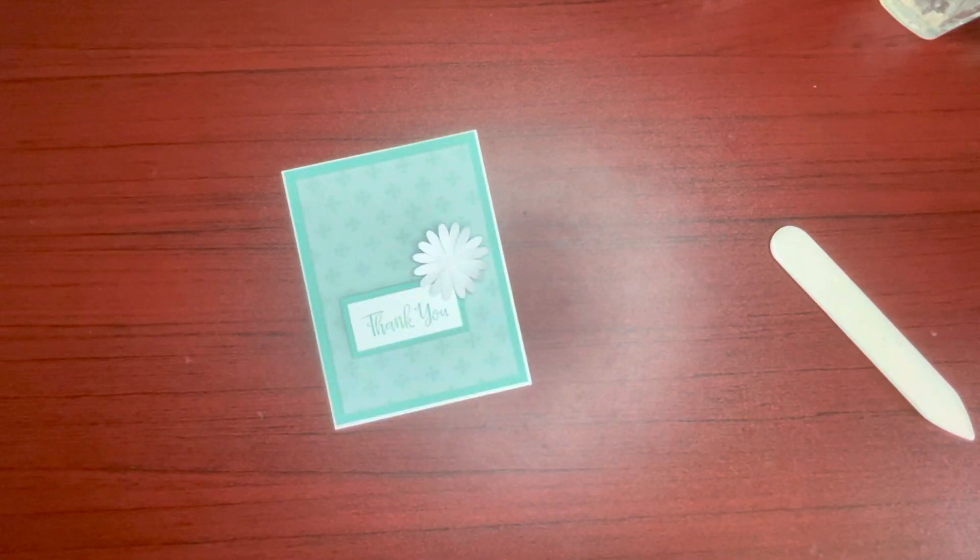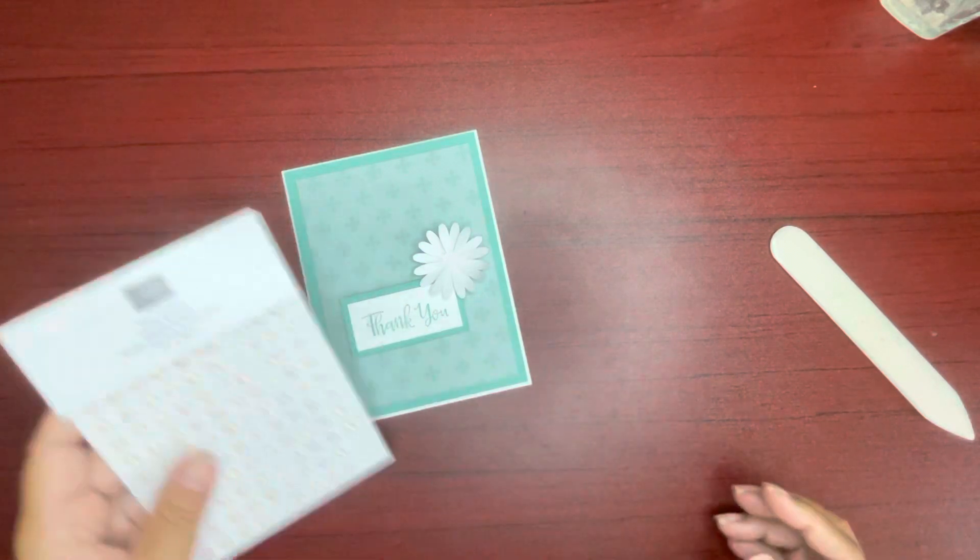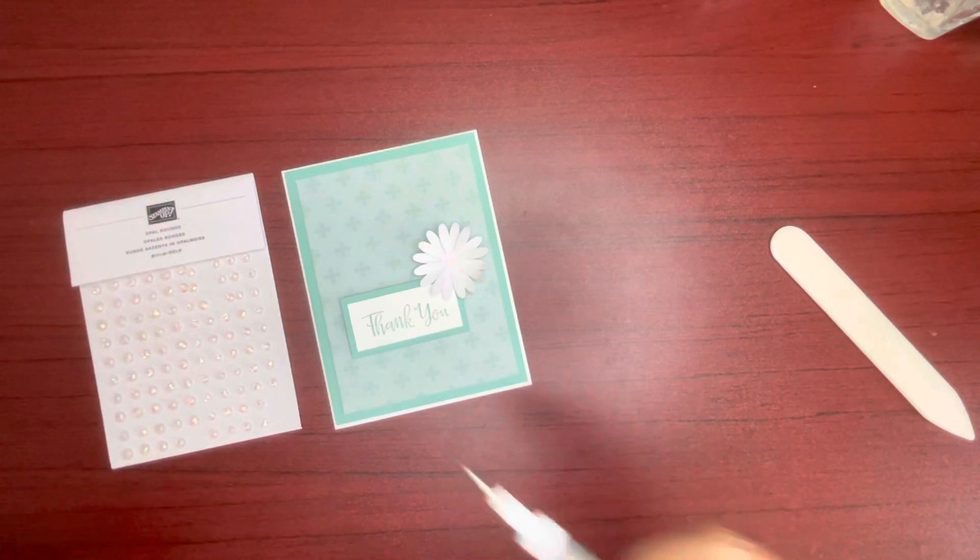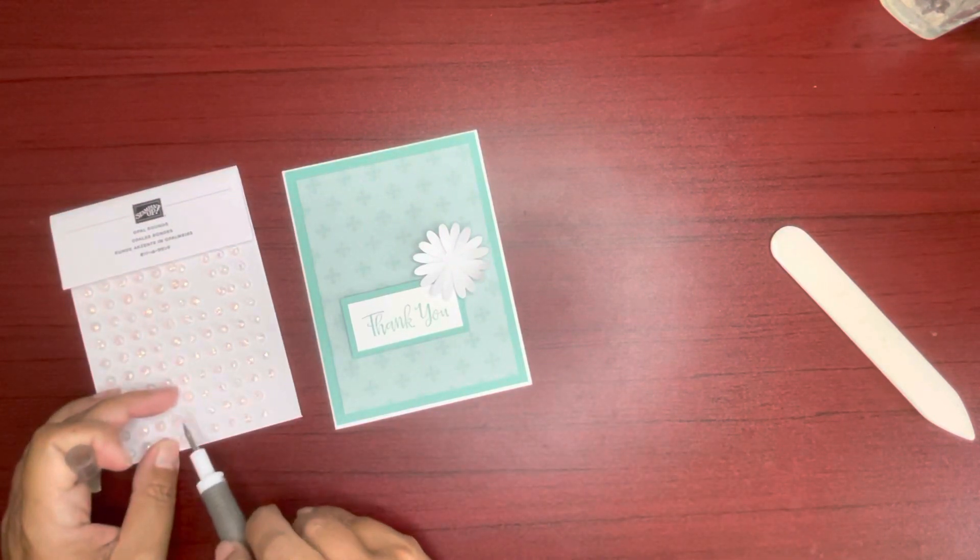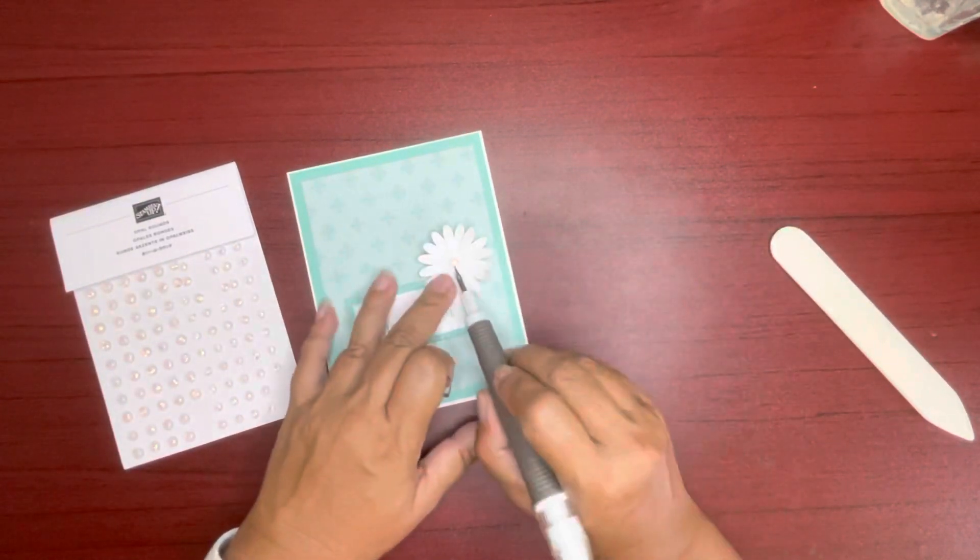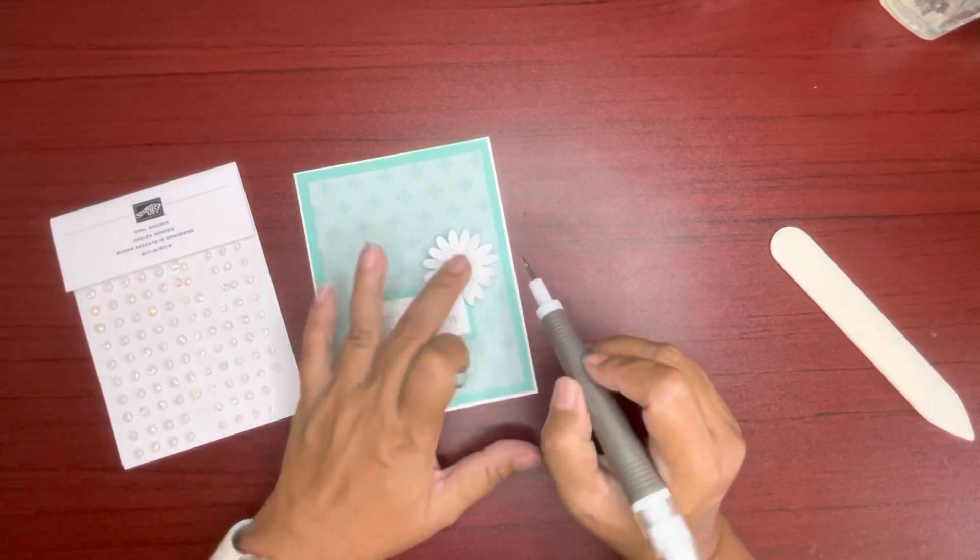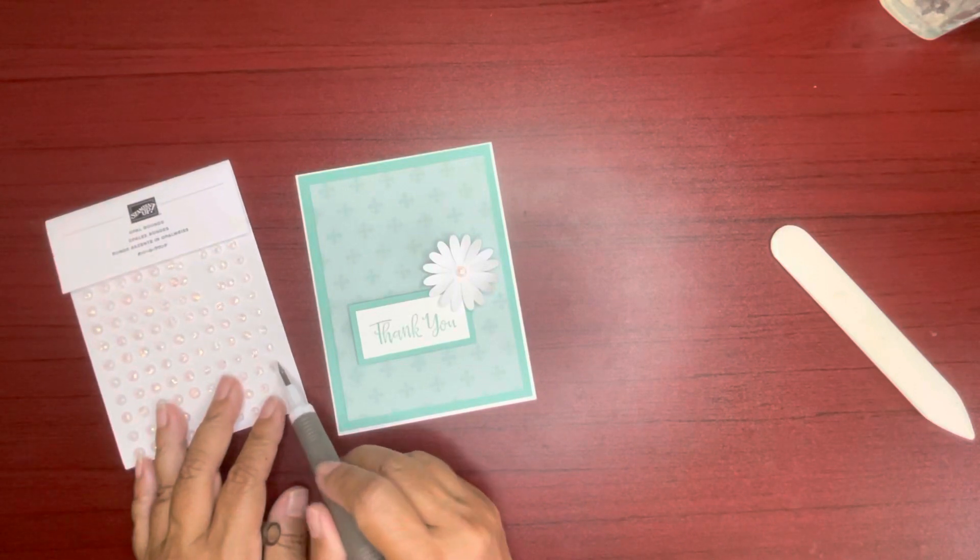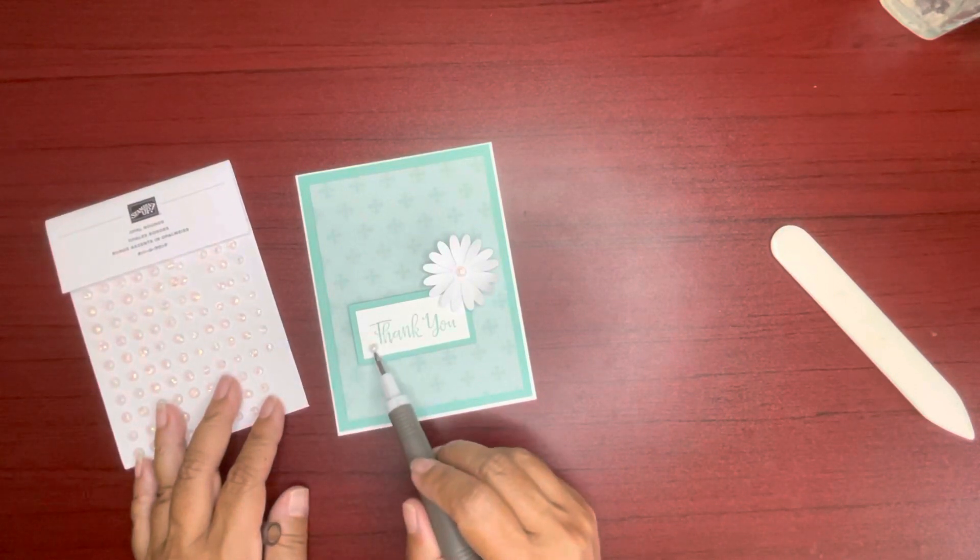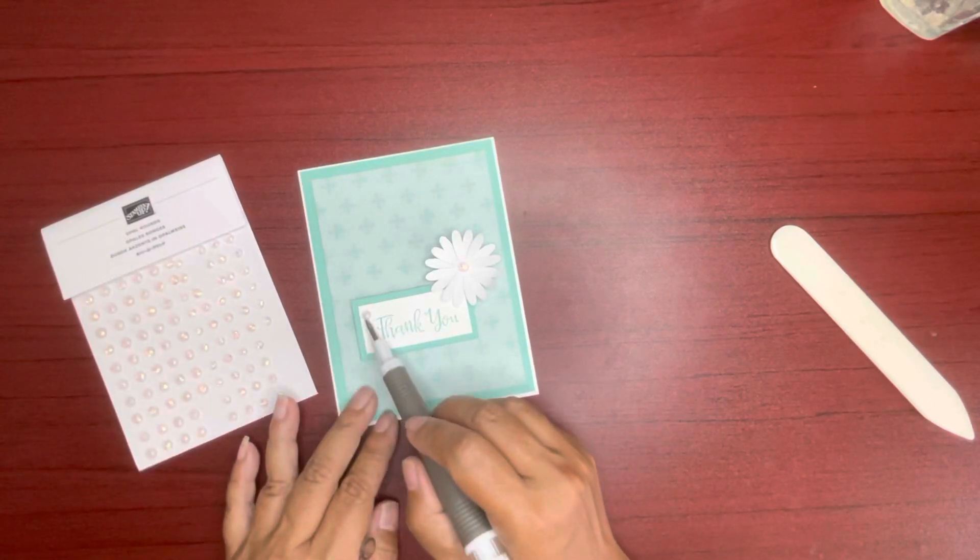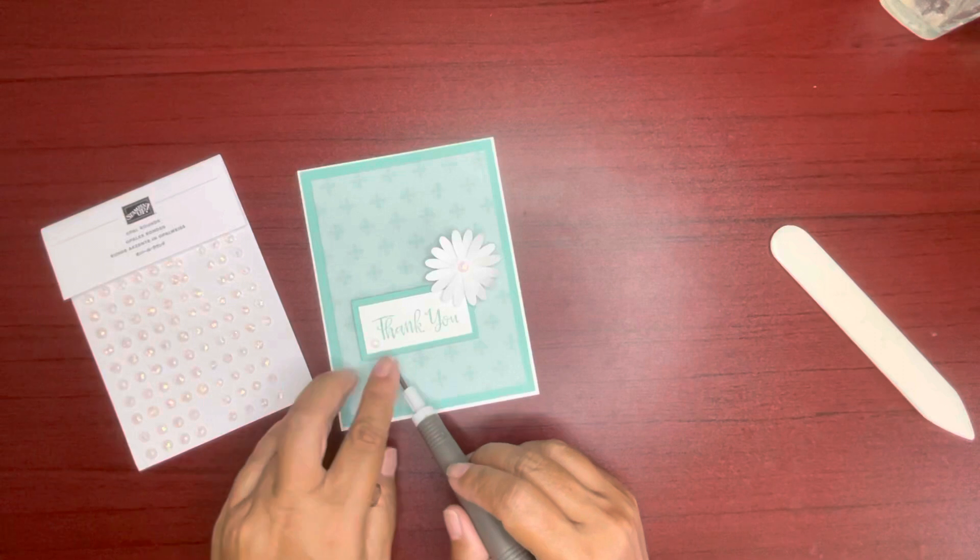And I was going to get the opal rounds and put one of those bigger ones on the top. Grabbing my Take Your Pick tool. Oh, it's not centered. Centering. And then perhaps one down here. And one down here.